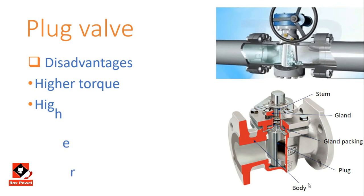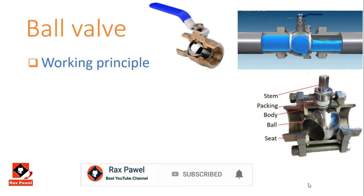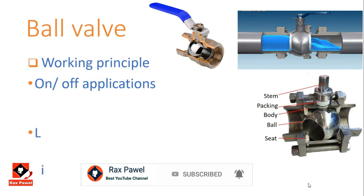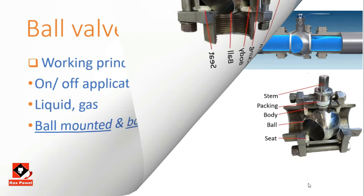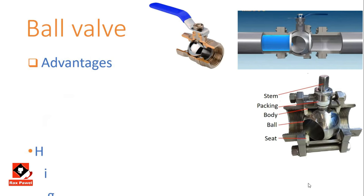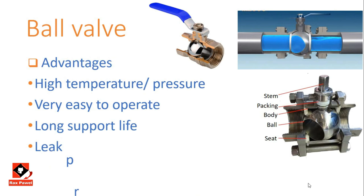The working principle of the ball valve is very similar to the plug valve. The seat matching the ball is circular, so seating stress is circumferentially uniform. The seats are usually made of polytetrafluoroethylene (PTFE), which is inert to all chemicals and has a low coefficient of friction. The valve is used only for on/off applications dealing with both liquids and gases. Ball valves can be divided into several types according to the way the ball is mounted and bore type. Advantages: it handles high temperature and high pressure applications, is very easy and quick to operate, and gives long service life and leak-proof performance.